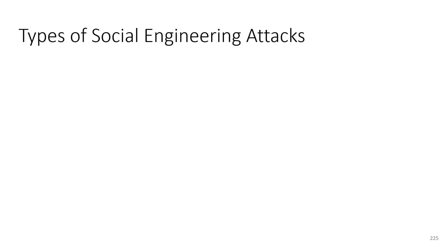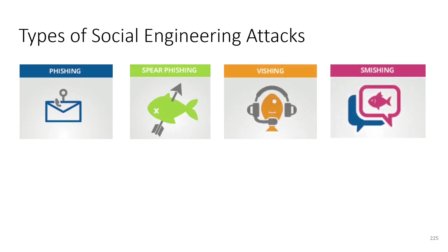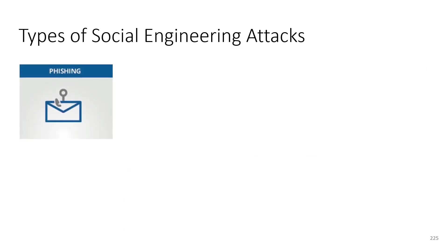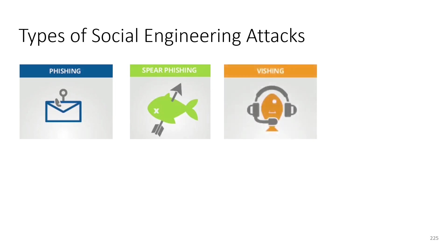Social engineering attacks come in different forms: phishing, spear phishing, vishing, smishing, whaling, and social media mining. Phishing is a random malicious email sent to anyone on the internet with no specific target. Spear phishing targets a specific institution or company — for example, targeting people who work at google.com. Vishing is fraud conducted over a voice call, where the attacker poses as a bank and requests your password, credit card number, and CVV code.